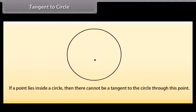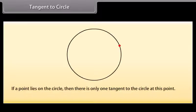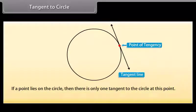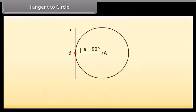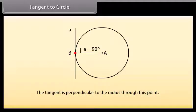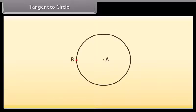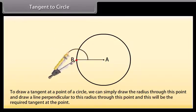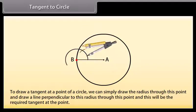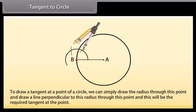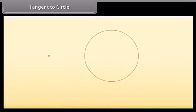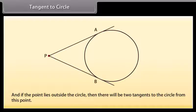Tangent to a circle: if a point lies inside a circle, then there cannot be a tangent to the circle through this point. If a point lies on the circle, then there is only one tangent to the circle at this point, and the tangent is perpendicular to the radius through this point. Therefore, to draw a tangent at a point of a circle, we simply draw the radius through this point and draw a line perpendicular to this radius. If the point lies outside the circle, then there will be two tangents to the circle from this point.